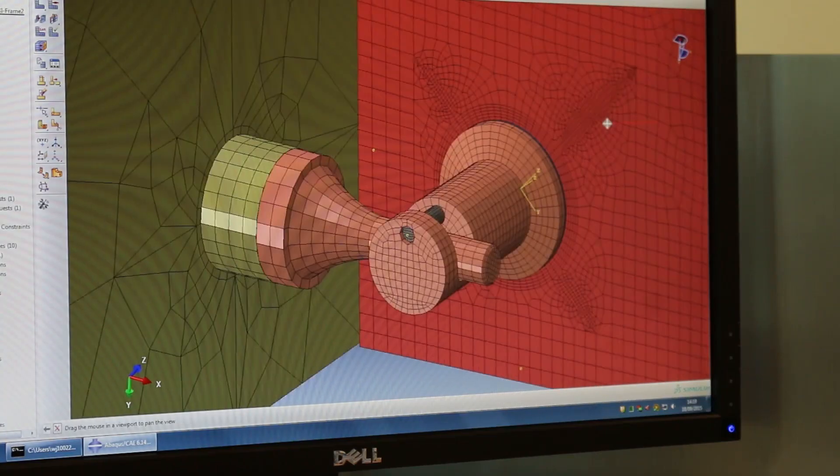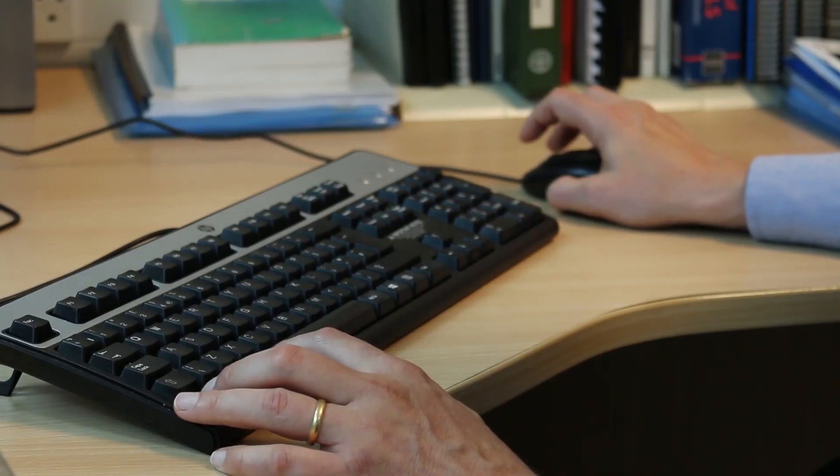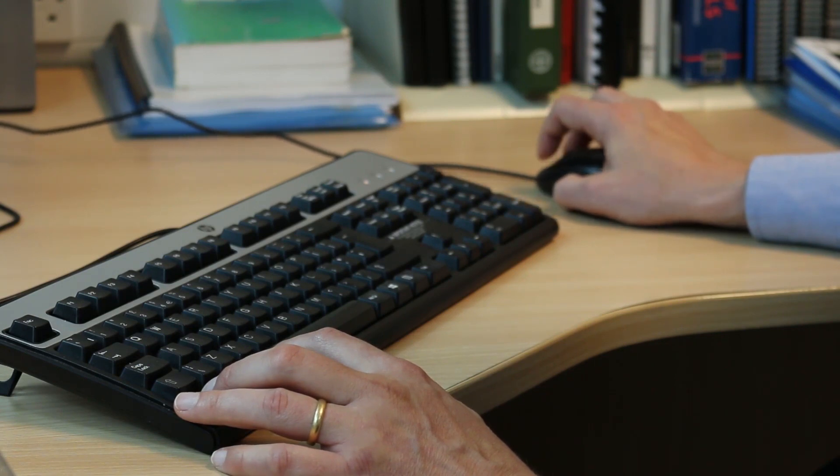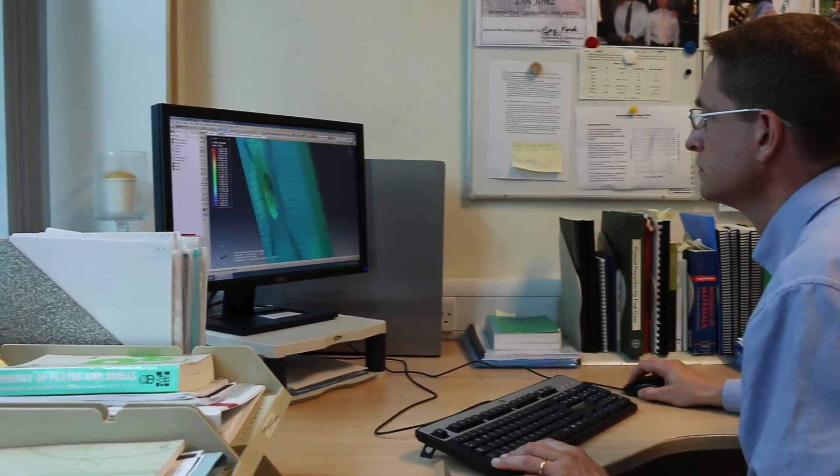For us to be able to do that, we use a technique called finite element analysis. That's a computer technique that allows us to break a complex problem down into finite elements, into small elements for which we know the solutions. By combining all that information together, we can generate a model that predicts the response of a glazing system.